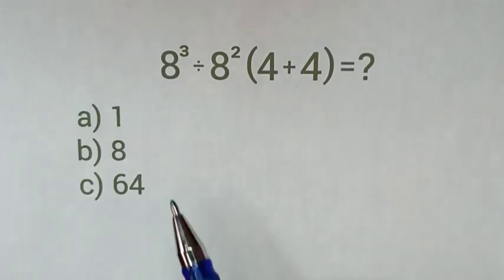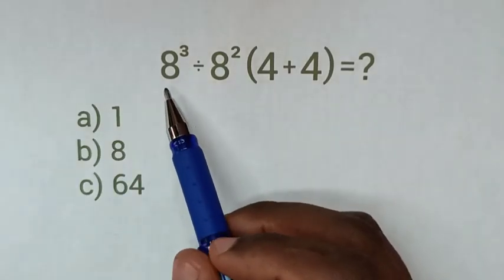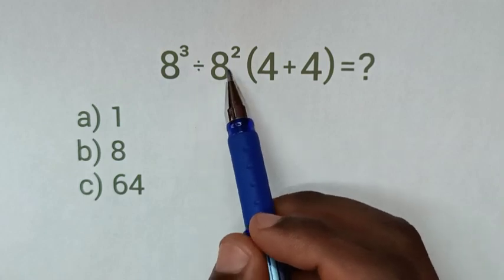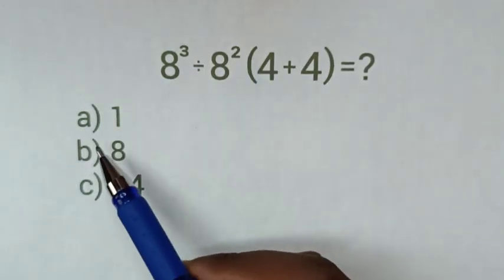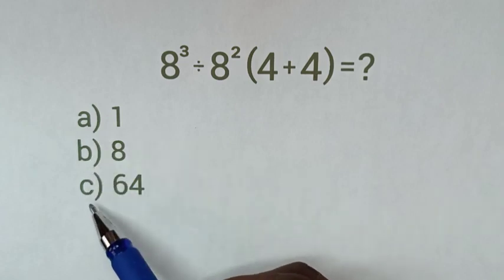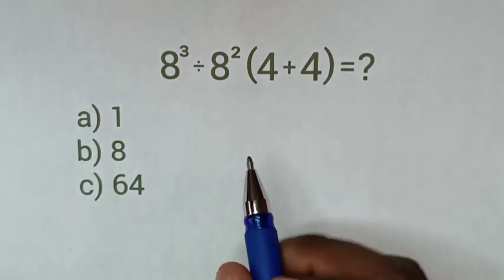Hello everyone, how to solve this math problem: 8 power 3 divided by 8 power 2 bracket 4 plus 4 bracket, by selecting the answers in A, B, or C. If you already get the answer,